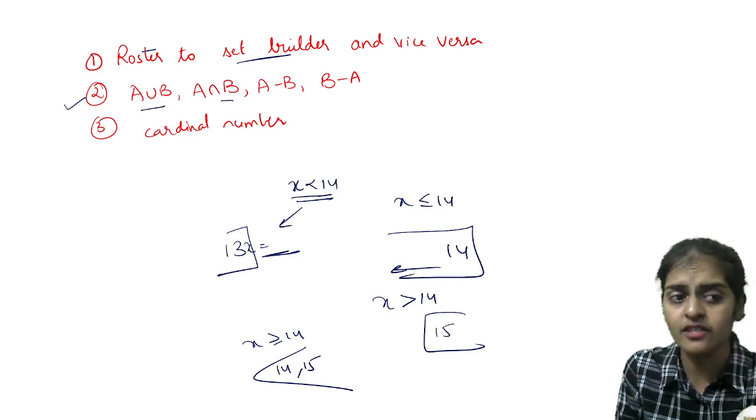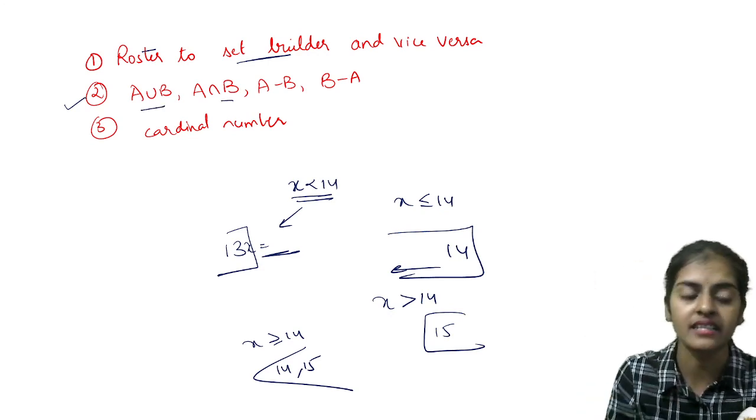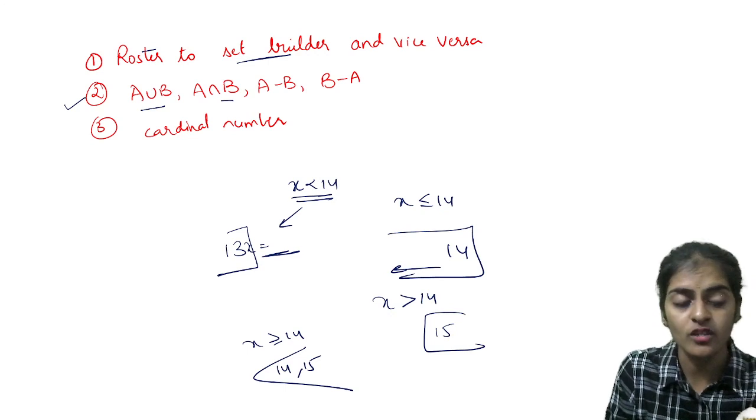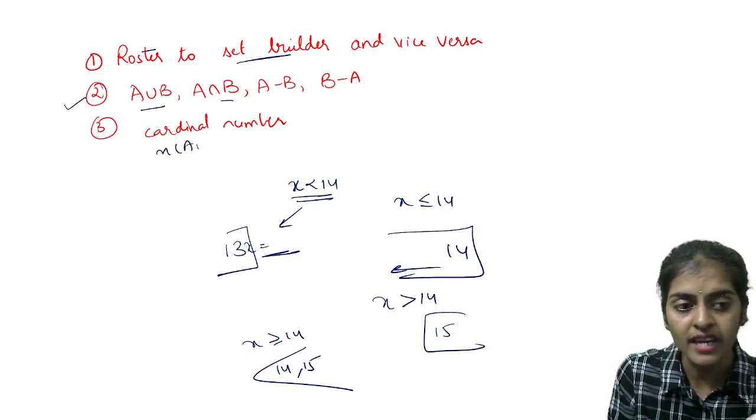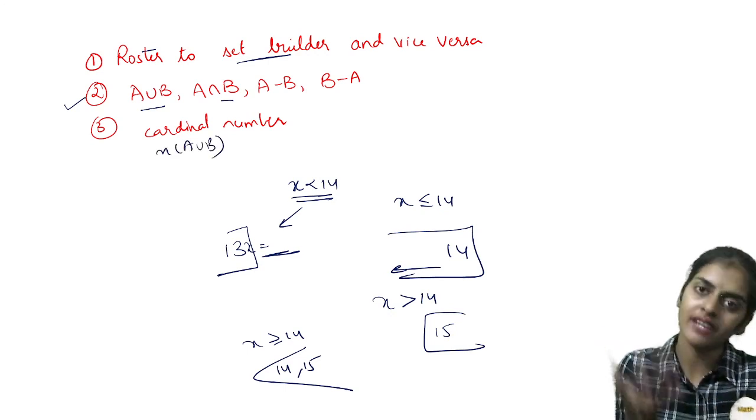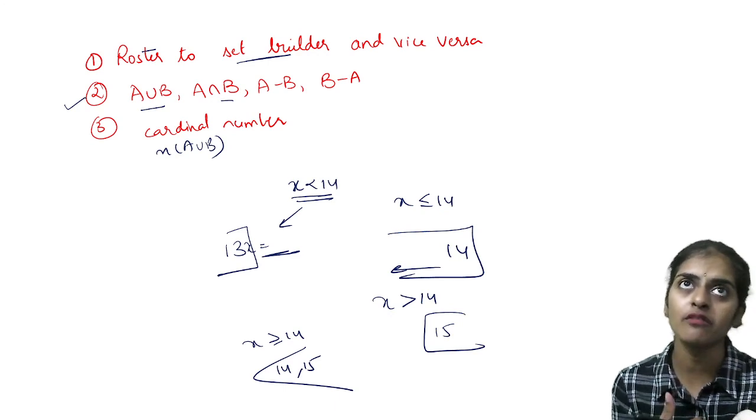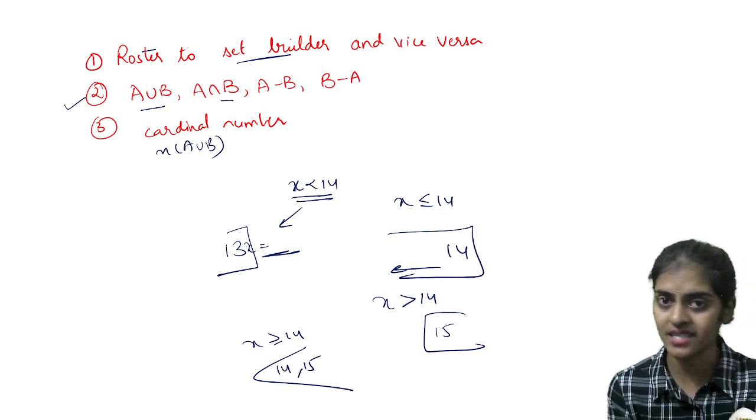Or else in short, if they ask you, they are asking you one operation together. And in set question, they are also asking you find n of A union B. So you will find A union B, then the cardinal number of A union B. So these model questions are being asked.